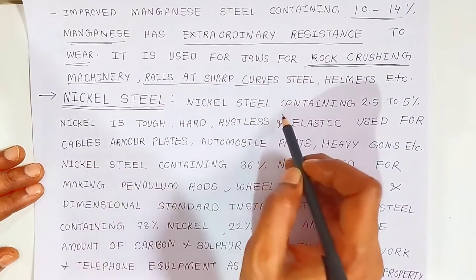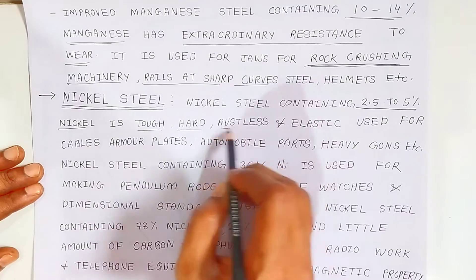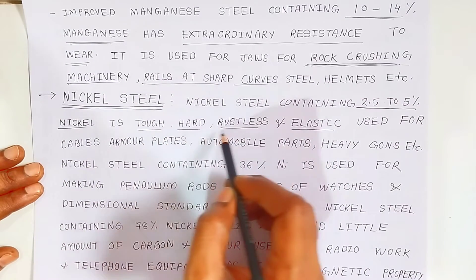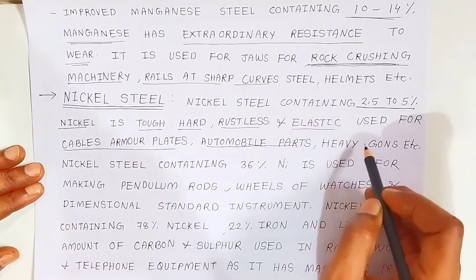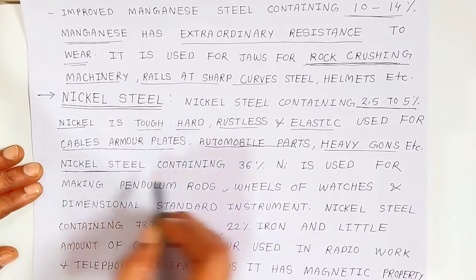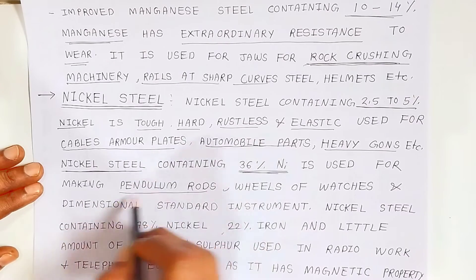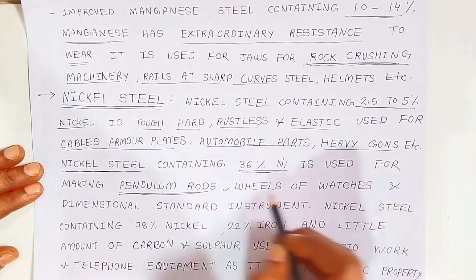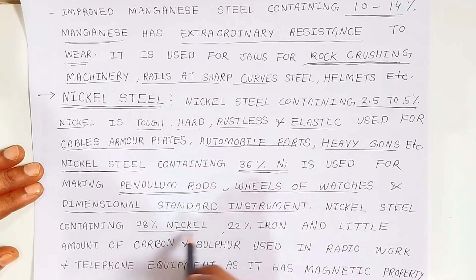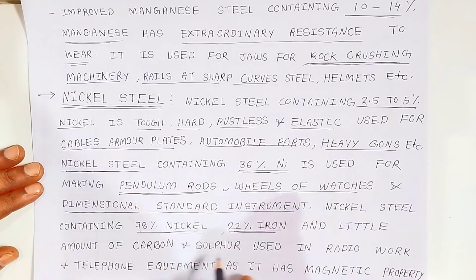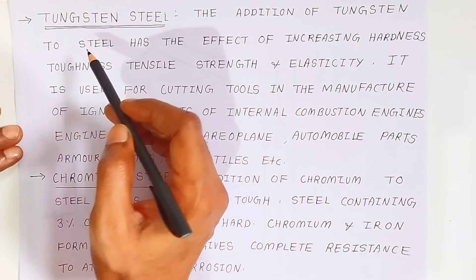Nickel steel containing 2.5–5% nickel is tough, hard, rustless, and elastic. It is used for cables and armor plates. Nickel steel containing 36% nickel is used for making pendulum rods, wheels of watches, and dimensionless standard instruments. Nickel steel containing 78% nickel and 22% iron, with small amounts of carbon and sulfur, is used in radio and telephone equipment and has magnetic properties.